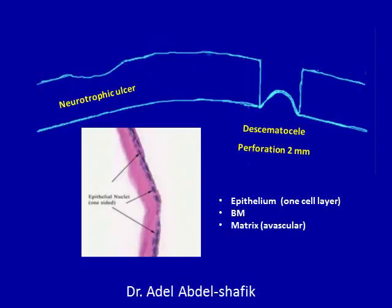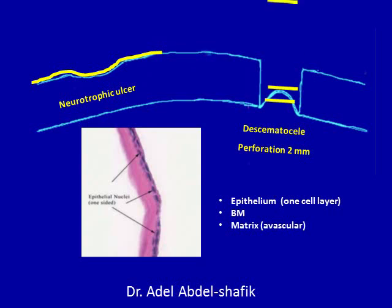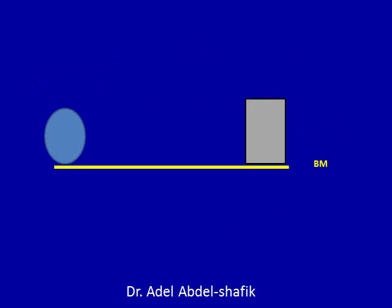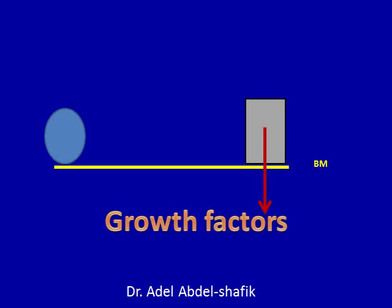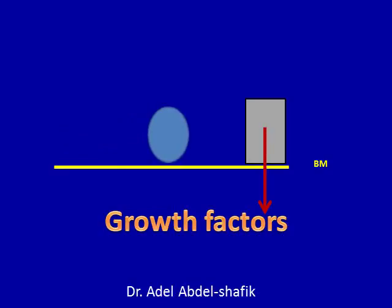The amniotic membrane is formed of one layer of epithelium attached to a basement membrane and an avascular matrix. It can be used for treatment of neurotrophic ulcers where the membrane is sutured to the surface, while in cases of descemetocele and perforation, multiple pieces of the membrane are used to fill the defect, biological glue is added, and then the membrane is sutured to the surface. The epithelial cells of the amniotic membrane secrete growth factors that help healing, and the basement membrane helps migration and attachment of cells, enabling them to cover the area.